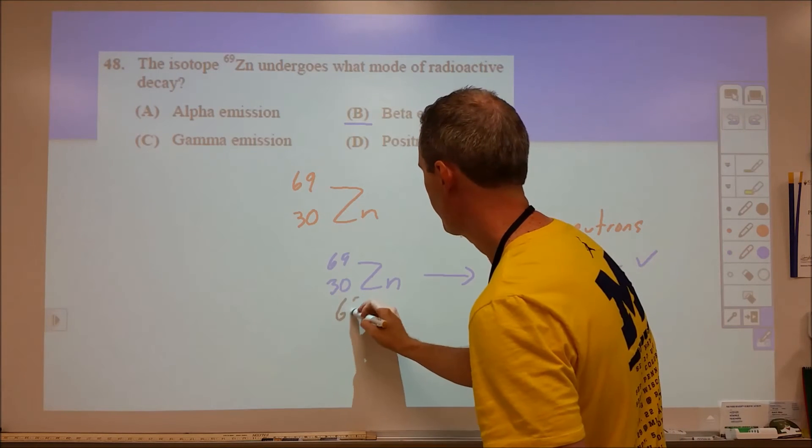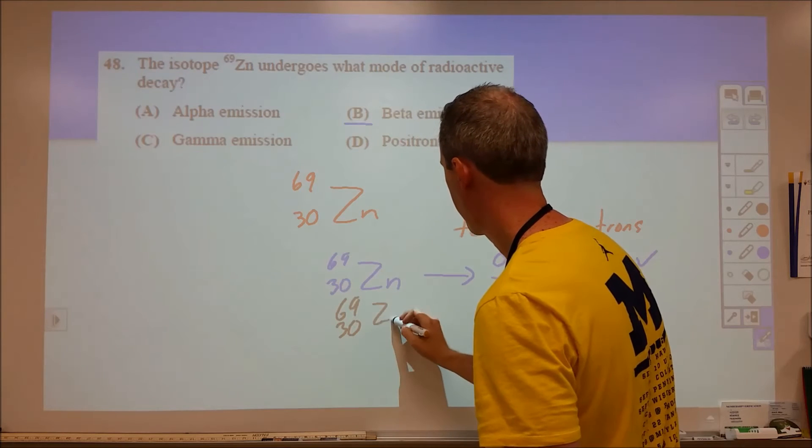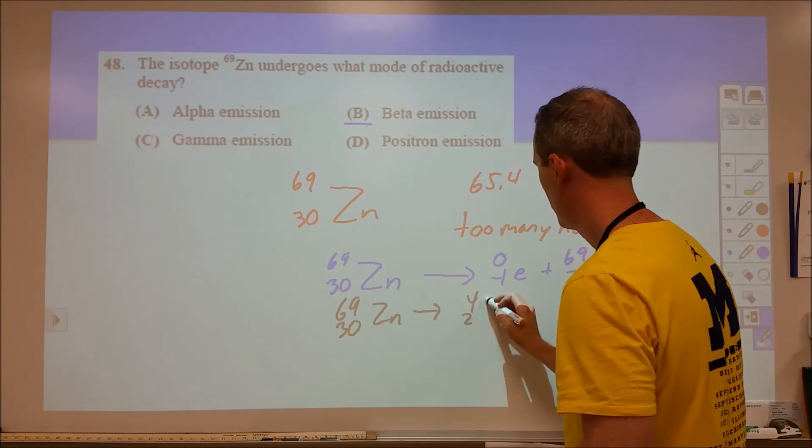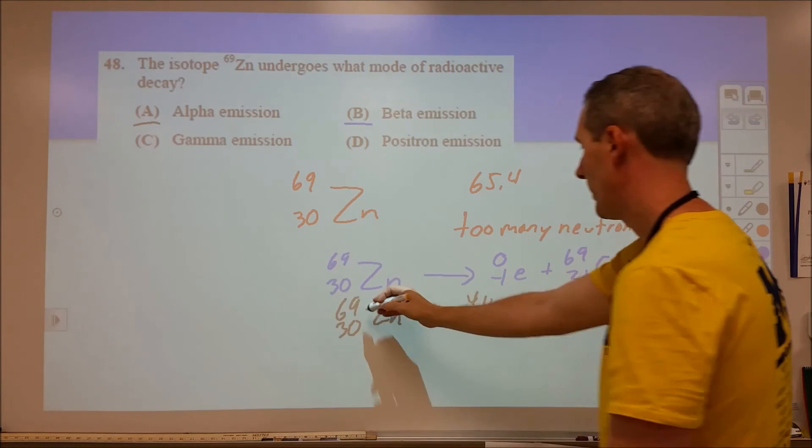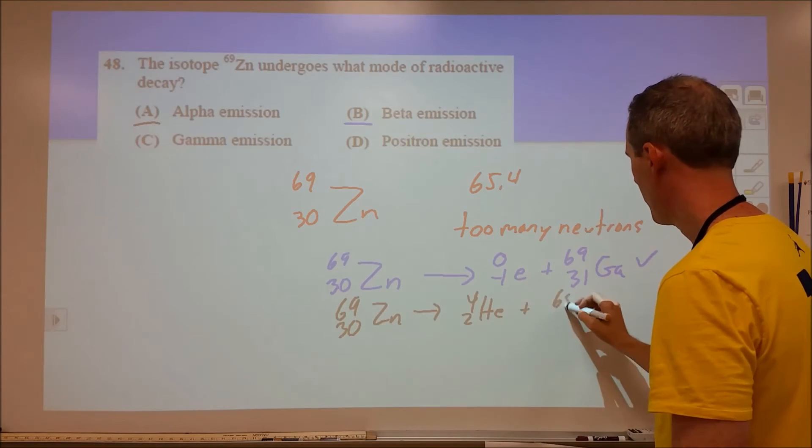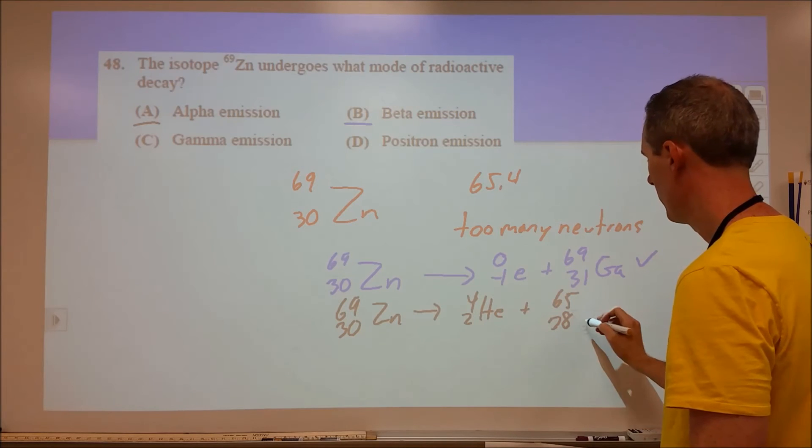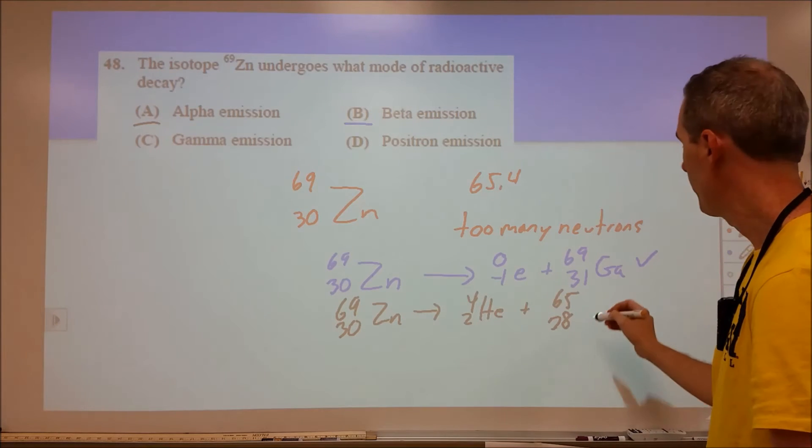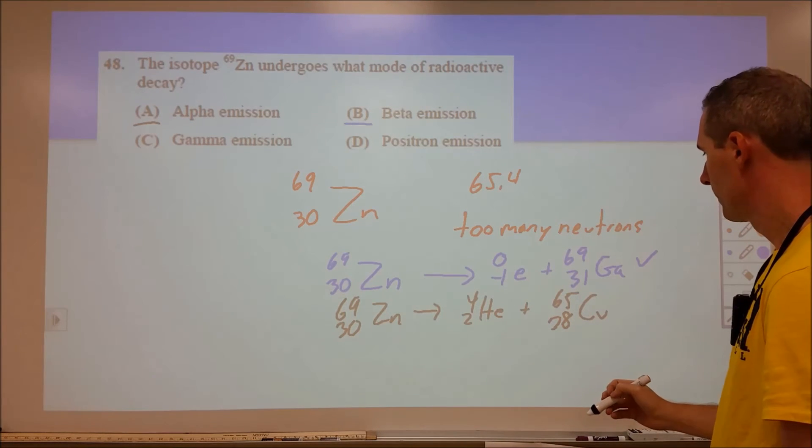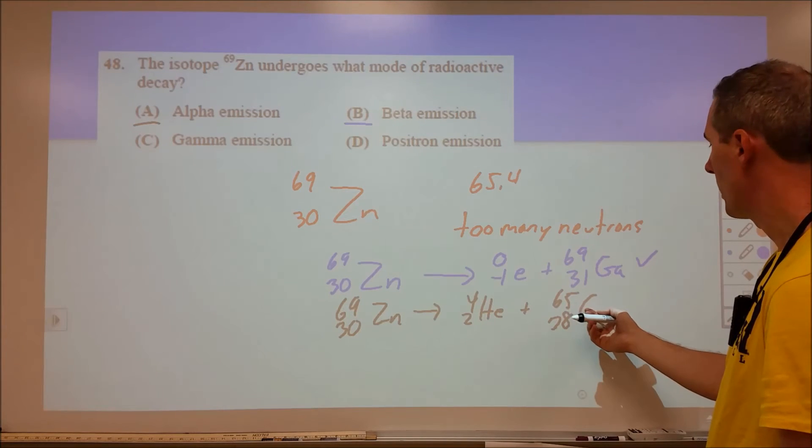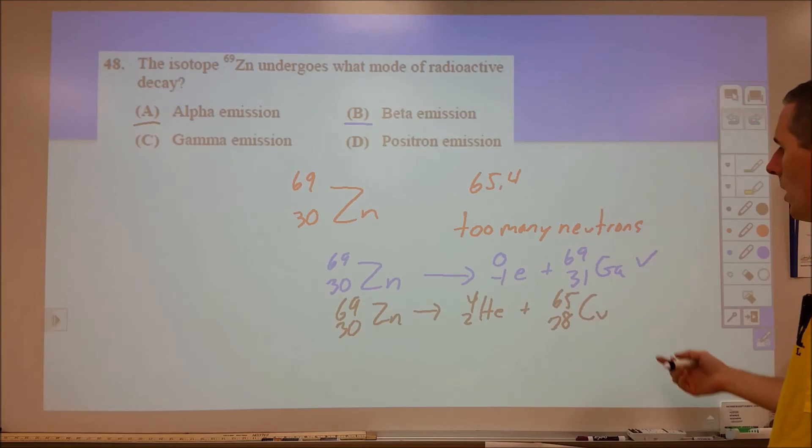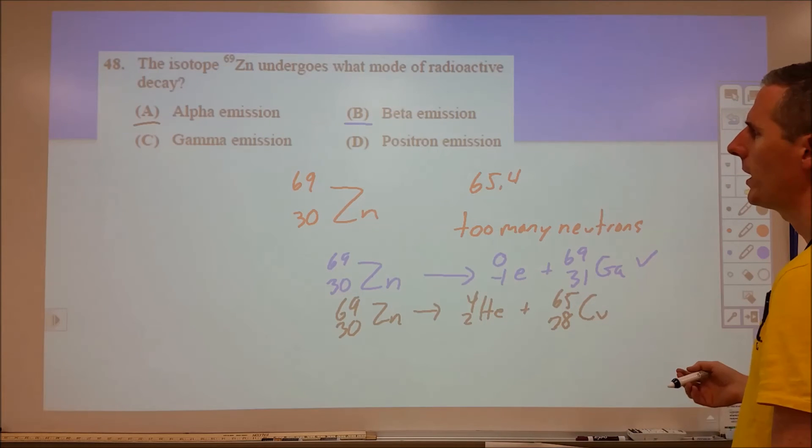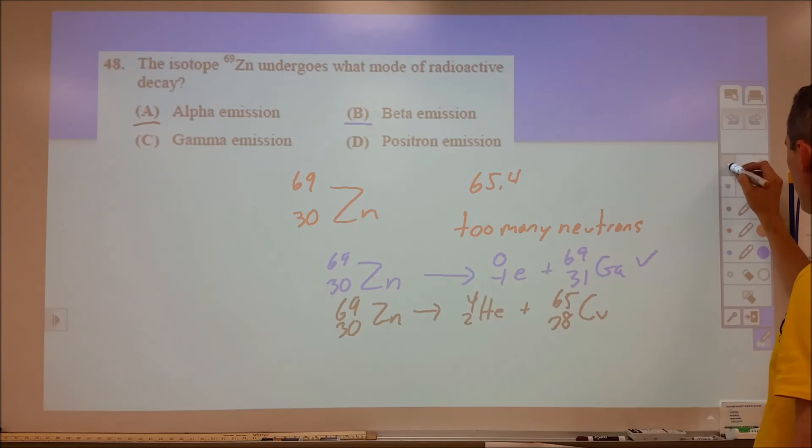If we look at an alpha decay, we're producing a helium nucleus. That's going to drop this to 65 and 28. So 28 is going to be copper. That's not unreasonable. We are approaching atomic mass that's a little closer than copper, 63 point something. But I would still stick with beta at this point.